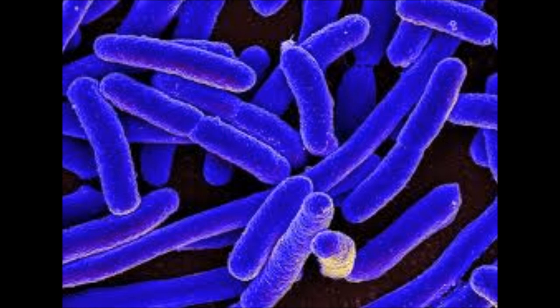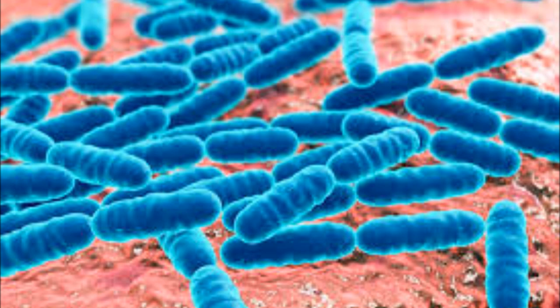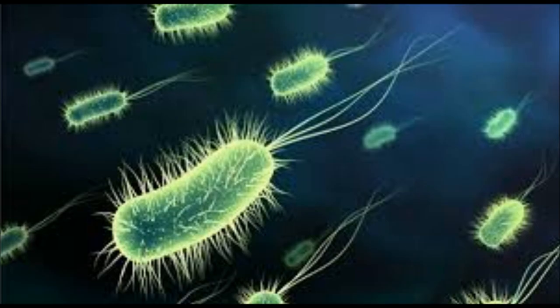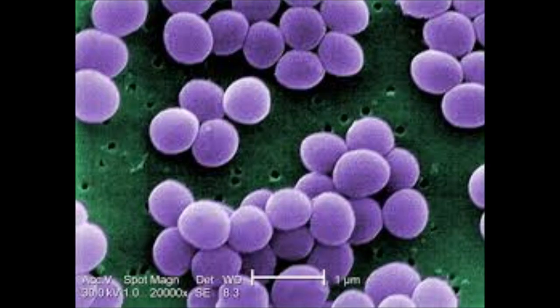Bacteria are omnipresent, meaning they can be found everywhere — in the soil, water, snow, hot springs, and even inside the body of living organisms. Some of them are aerobic and some are anaerobic. Some bacteria are motile as they have specialized structures called flagella which help in locomotion. Some bacteria are very useful for us and some are pathogenic. The pathogenic bacteria secrete toxins in the body of plants and animals and cause various diseases like cholera, typhoid, leprosy, tuberculosis, diphtheria, etc.